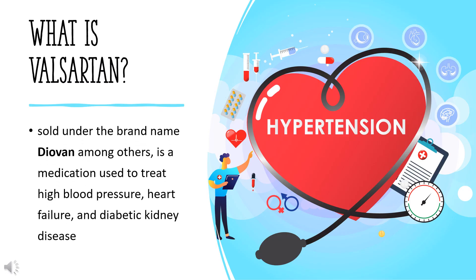What is Valsartan? Valsartan, sold under the brand name Diovan among others, is a medication used to treat high blood pressure, heart failure, and diabetic kidney disease. It belongs to a class of medications referred to as angiotensin-2 receptor blockers, ARBs. It is a reasonable initial treatment for high blood pressure.